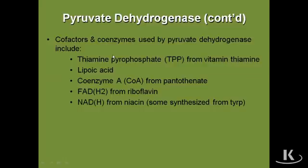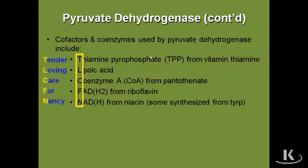The national board might ask which coenzymes this enzyme needs to work, or which vitamins are needed to make those coenzymes. Is there an easy way to remember these five coenzymes? Yes — look at the first letters: T, L, C, F, N, and the mnemonic is 'Tender Loving Care for Nancy.' If you know that mnemonic and its first letters, it helps you deduce which coenzymes pyruvate dehydrogenase needs to work.